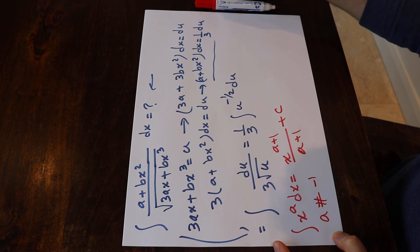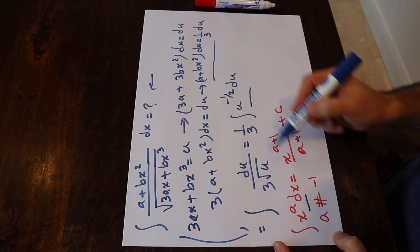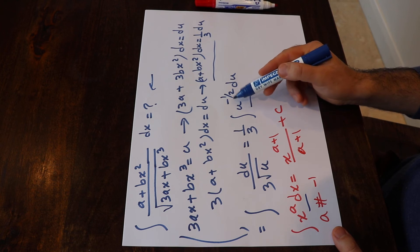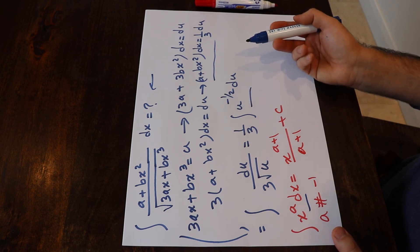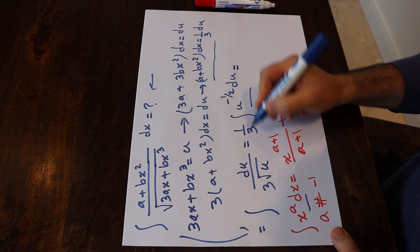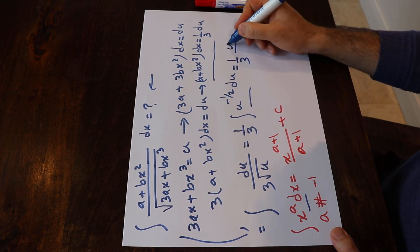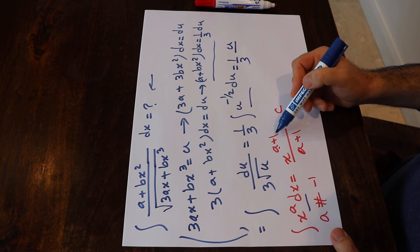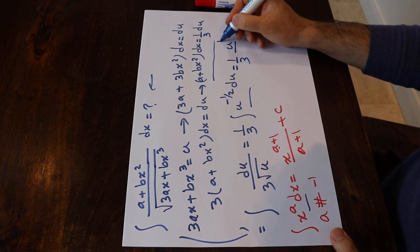And if you compare this integral with this one, you see they have the same format. In this particular case, a is equal to minus 1/2. So therefore, this one will be equal to 1 divided by 3 times u to the power of (a + 1), that is minus 1/2 plus 1.